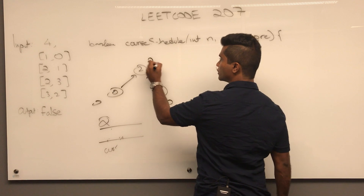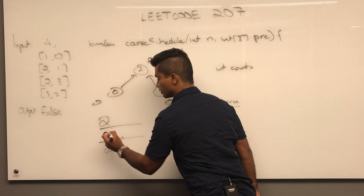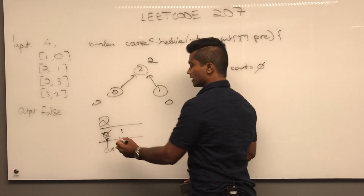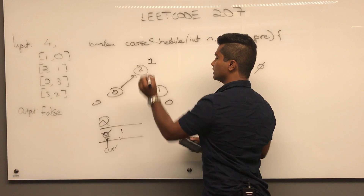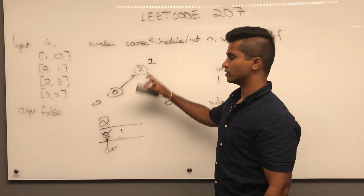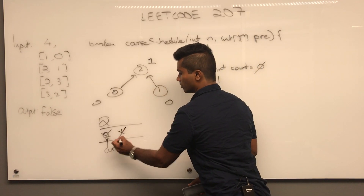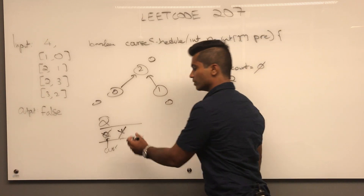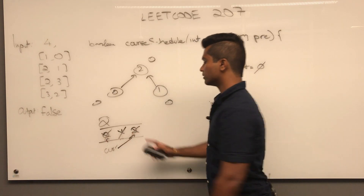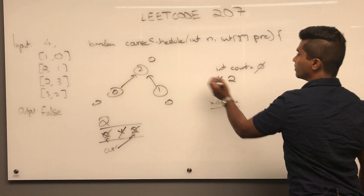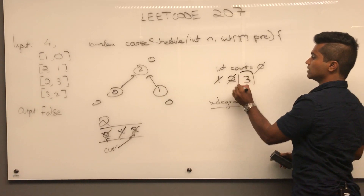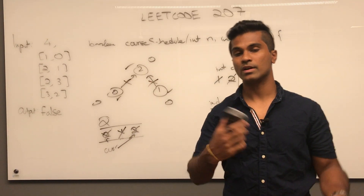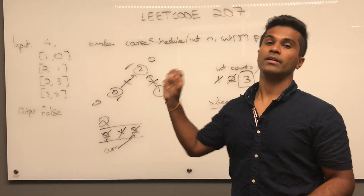Here's an example where we return true. Two nodes have in-degree zero and one has in-degree two. We put both zero and one in the queue. We pop zero, increment count, decrement two's in-degree. Then we pop one, increment count again, decrement two to zero — two now enters the queue. We pop two, increment count. The final count equals the total number of nodes, meaning we successfully visited every node and completed all courses.